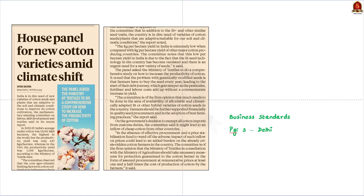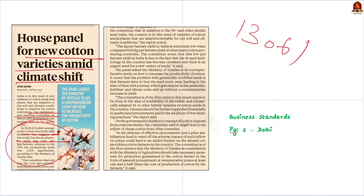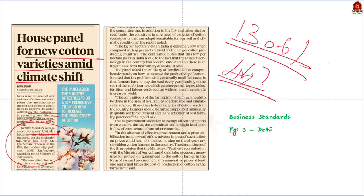Look at this article — the parliamentary standing committee on textiles submitted a report stating that India needs new varieties of cotton seeds and plants adaptive to its soil and climatic conditions to improve cotton cultivation. A worrying fact: in 2022-23, India's acreage under cotton cultivation was 130.61 lakh hectares — the highest in the world — but productivity was only 447 kg per hectare, compared to 1065 kg per hectare in the USA, showing India's ineffectiveness in agricultural production.